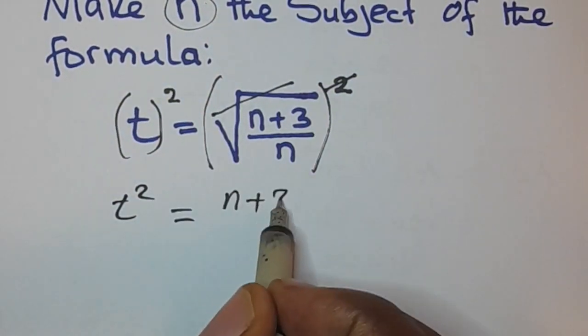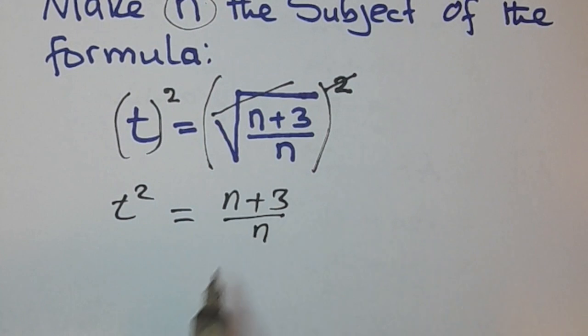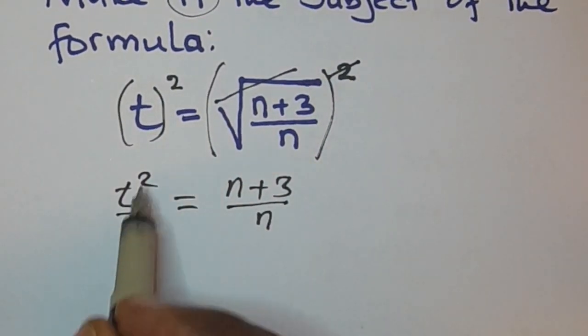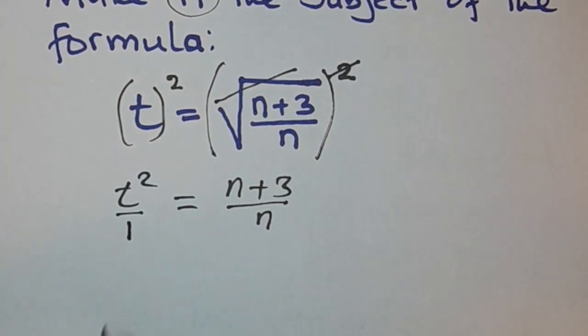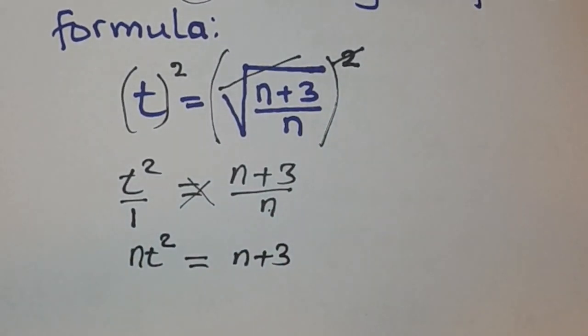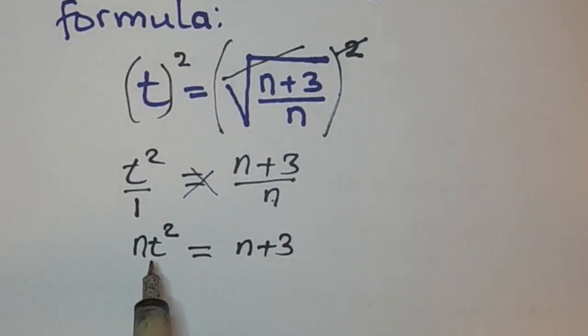On the right you have a fraction. This can also be written as a fraction over 1. Then cross multiply. You are going to have n times t squared, nt², is equal to n plus 3, because 1 times n plus 3 is n plus 3.